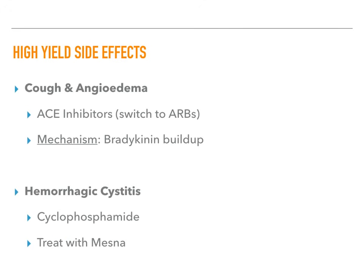Cough and angioedema are caused by ACE inhibitors, a first-line treatment for high blood pressure. If a patient develops facial swelling or a dry cough, switch them to an ARB. The mechanism is a buildup of bradykinin — ACE normally breaks down bradykinin, so inhibiting it causes bradykinin accumulation, which produces the dry cough and angioedema.